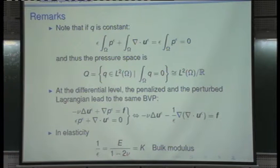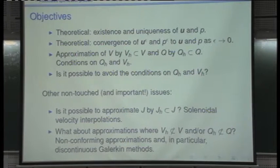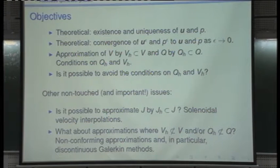Let's go to the basic theory for the continuous problem. We want to prove that the solution exists and is unique. The first result is almost trivial: there exists a unique solution to the Stokes problem posed in J, the space of H1 functions satisfying the divergence-free condition. In that space, the problem reduces to a(u,v) = l(v) for all v in J, and existence and uniqueness follow immediately from Lax-Milgram's lemma, since the problem is coercive.